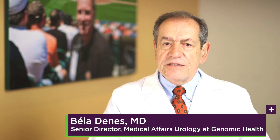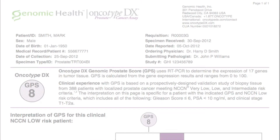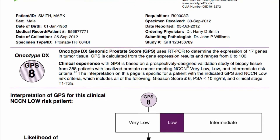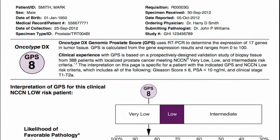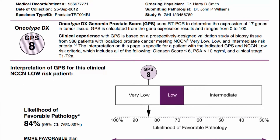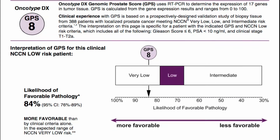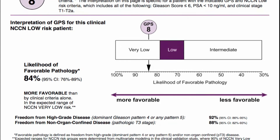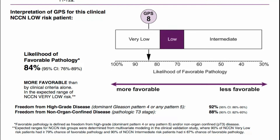As urologists making treatment decisions for men newly diagnosed with low-risk prostate cancer, the big decision is whether to treat immediately or to consider active surveillance. Oncotype DX provides additional information beyond standard parameters to enable you and your patients to more confidently choose active surveillance or immediate treatment as the most appropriate initial management strategy.